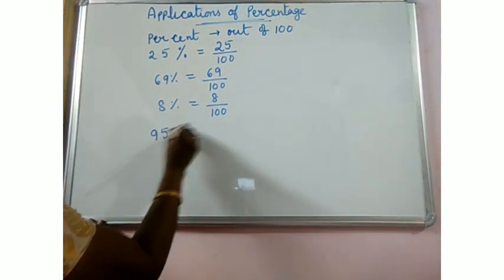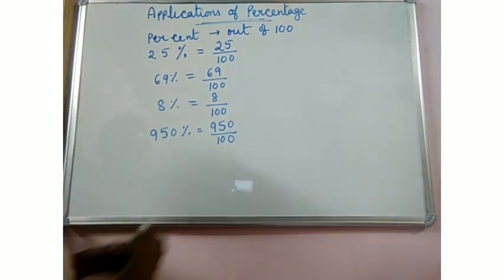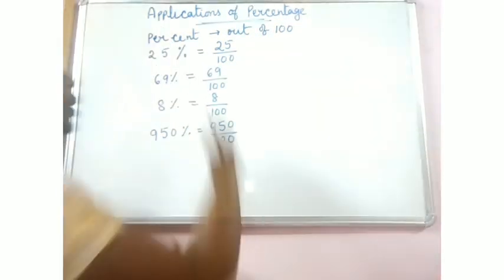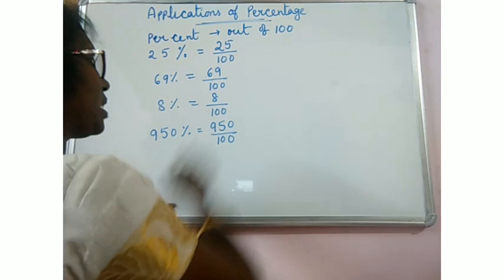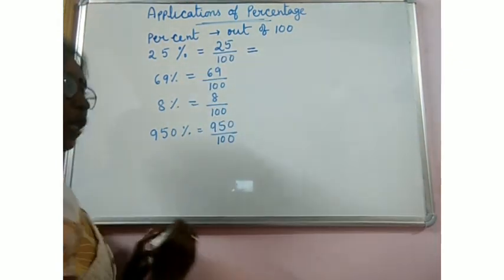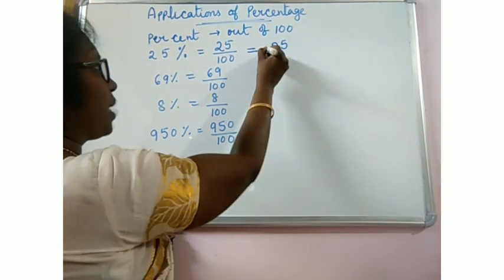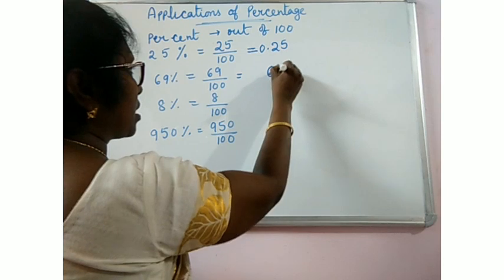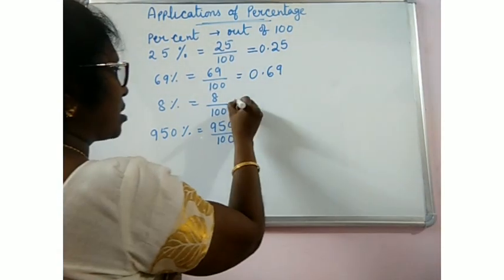950 percent means 950 by 100. These are the fractions - percent to fraction we have converted. If you want to convert to decimals, simply 25 by 100. If the denominator is 1 and some zeros, write the numerator, after two places put a decimal. Same way, 69 by 100 means write 69, after two places put a decimal.